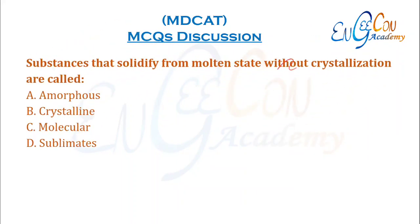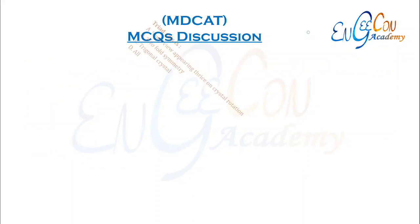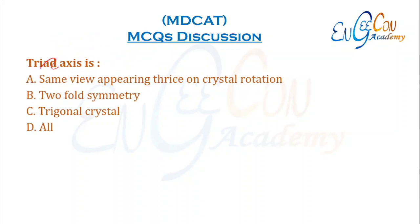Substances that solidify from the molten state without crystallization are called amorphous solids. Triad axis: the same view appears three times during crystal rotation, as given in the textbook.